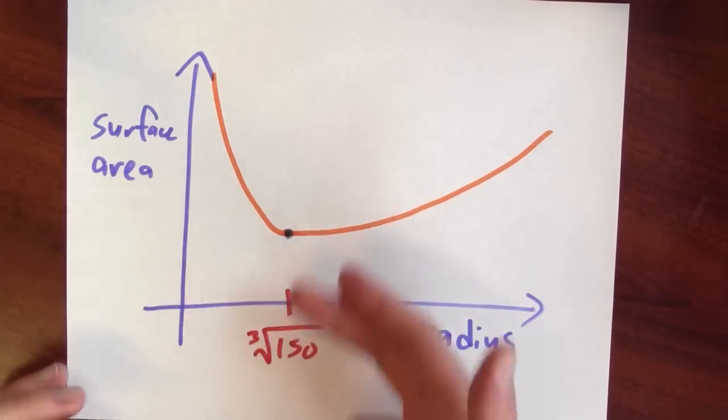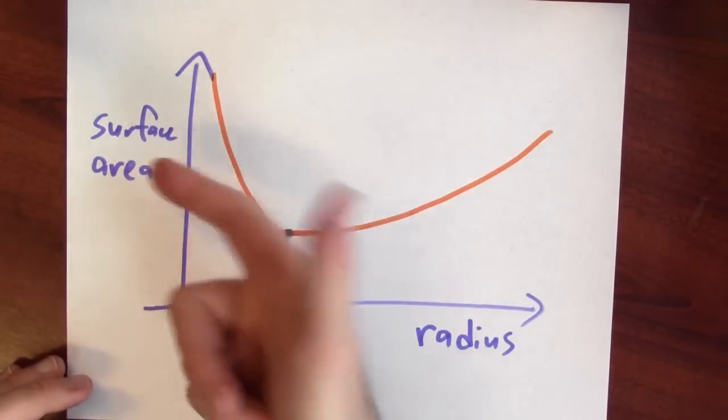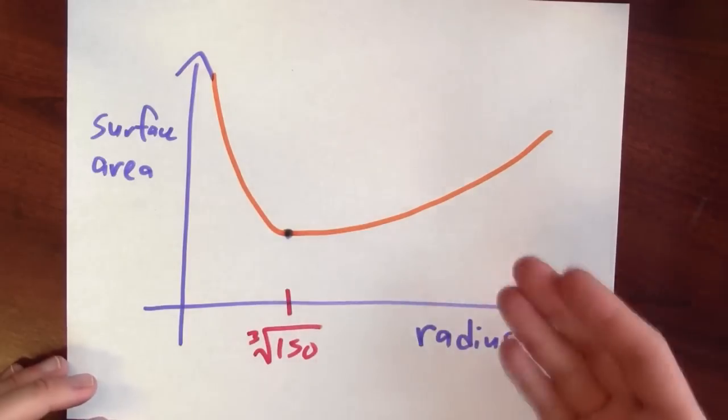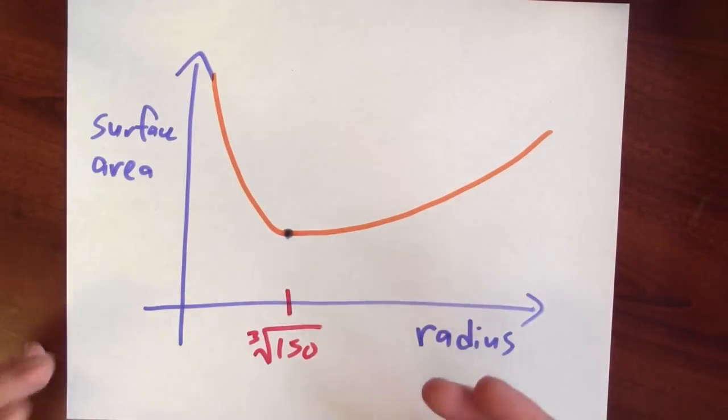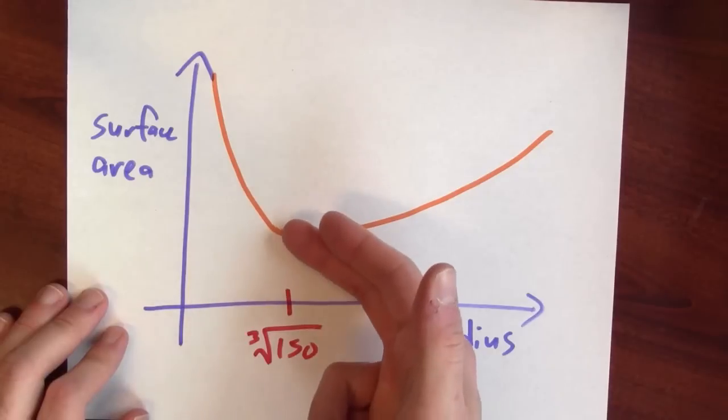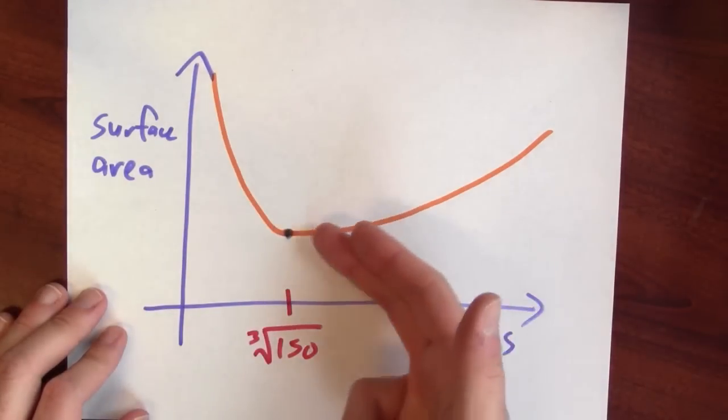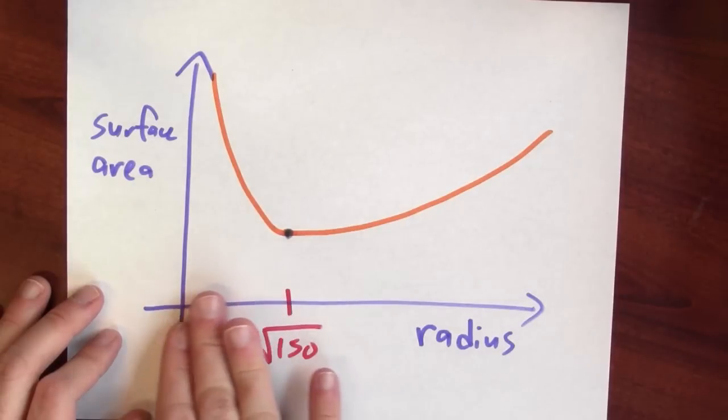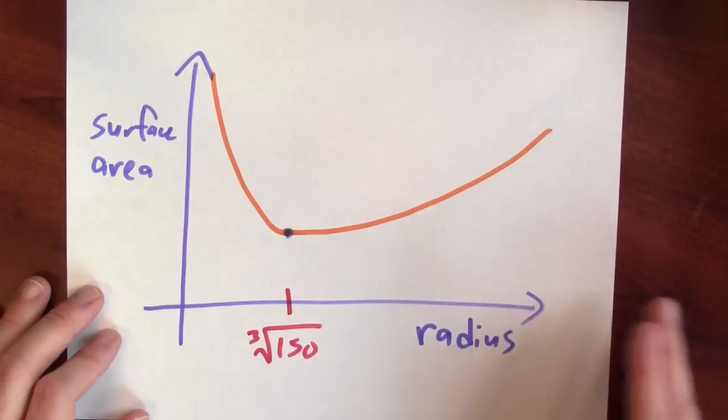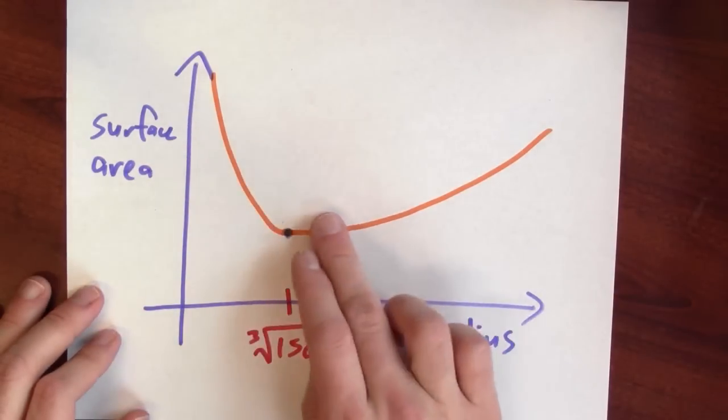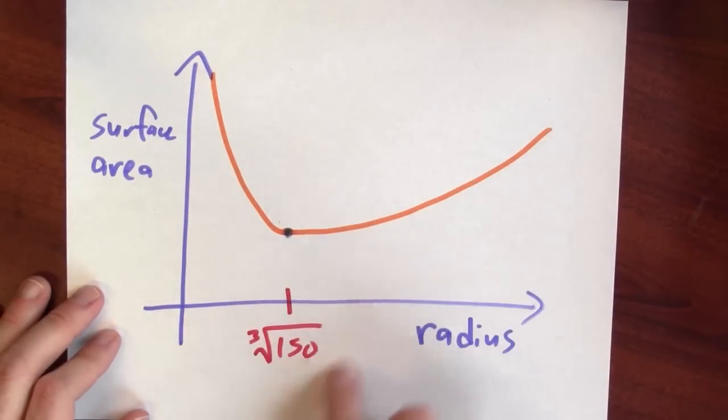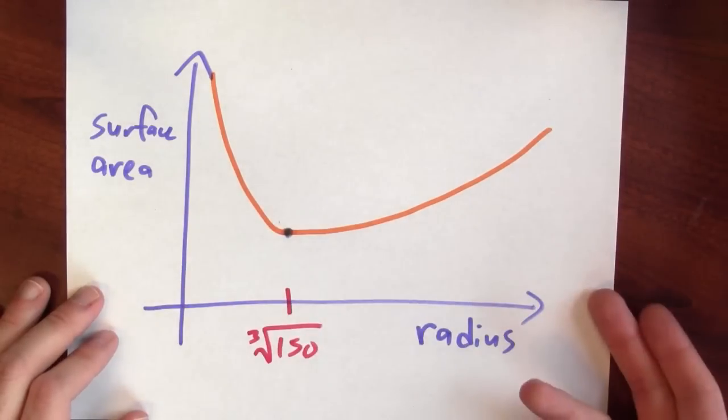And you can see that from this graph. Here, I'm graphing the surface area for a given radius of soup can containing 300 pi cubic centimeters of soup. And you can see that the graph goes up towards infinity here and up towards infinity there. And that's exactly the situation where the radius is very small or very big. The derivative is negative and then positive. The function is decreasing and then increasing. So this value really is a local minimum. And in fact, this is the global minimum of this function. And that's why this is the best choice for your soup can.